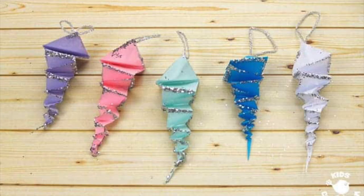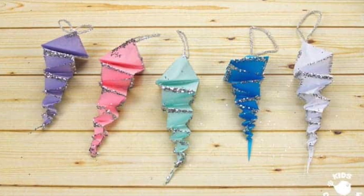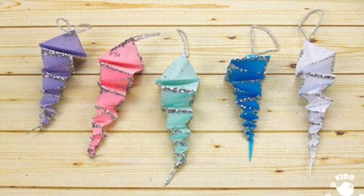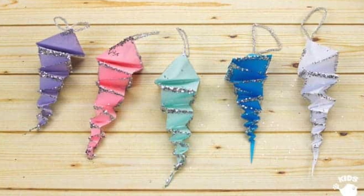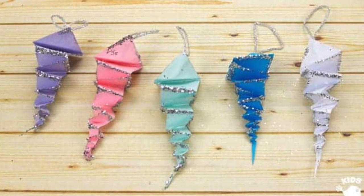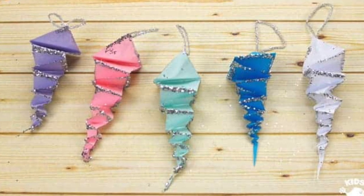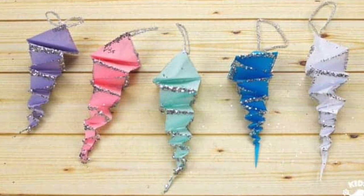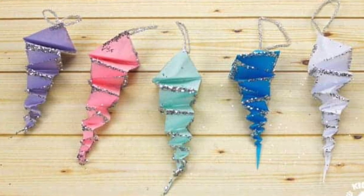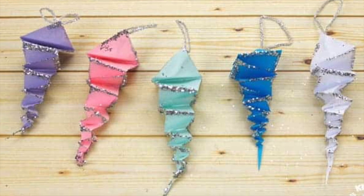Attach a small piece of ribbon to the wide top end of the icicle with glue. This is what you can use to hang it up as a decoration. If you want to take some glue, outline the edges of the icicle, and add some glitter, you can give it an extra sparkle. Glitter glue works very well too.